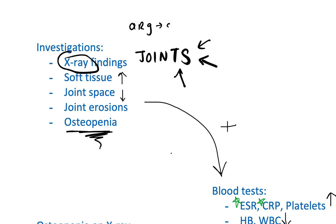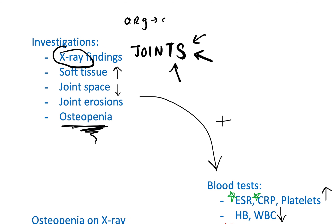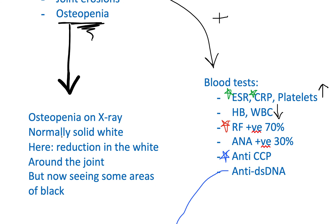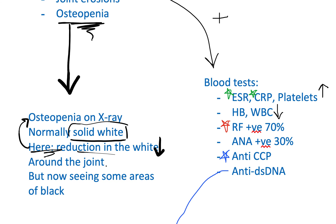How do we see osteopenia on X-ray? Normally on X-ray, bone appears as solid white. In osteopenia, there is a reduction in the white density around the joint. So be aware: where is it happening? It's happening around the joint — that is juxta-articular osteopenia.